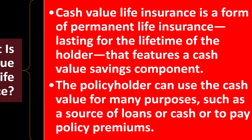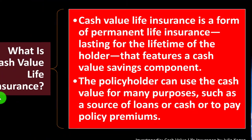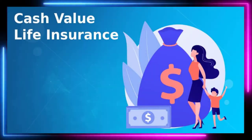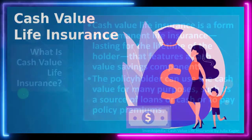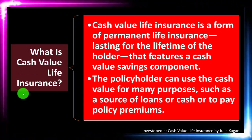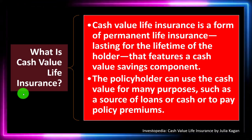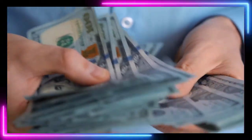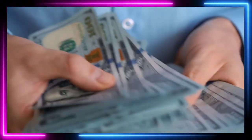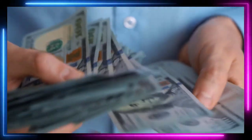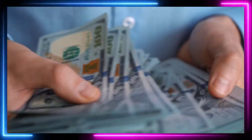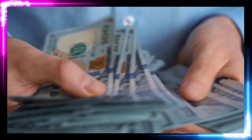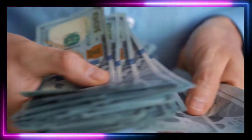The policyholder can use the cash value for many purposes, such as a source of loans, cash withdrawals, or to pay policy premiums. As the cash value builds up, it acts as an investment component of the life insurance, unlike term insurance which has no cash value. Benefits include taking loans against it and possible tax advantages related to estate planning.